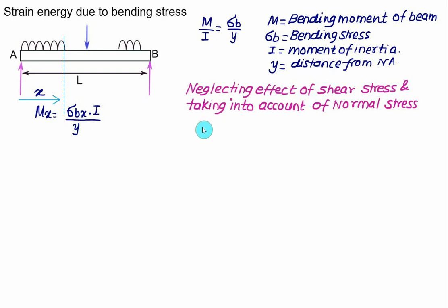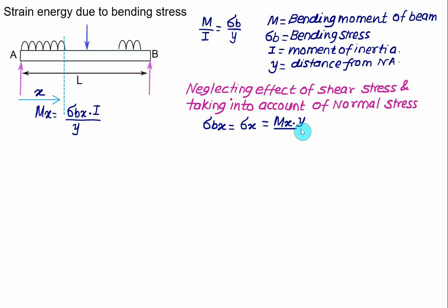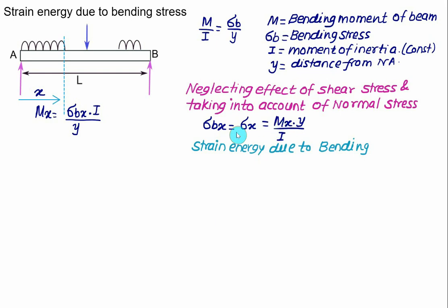The bending stress at any location X is represented as σ_BX, which I will denote as σ_X — the normal stress at location X. It equals the bending moment M_X at that location multiplied by Y, the distance from the neutral axis, divided by the moment of inertia I of the given cross-section. Since the bending moment is variable and changes with X, the bending stress also changes. The strain energy due to bending is calculated by integration: U equals the integral of σ_X² divided by 2E multiplied by dV.